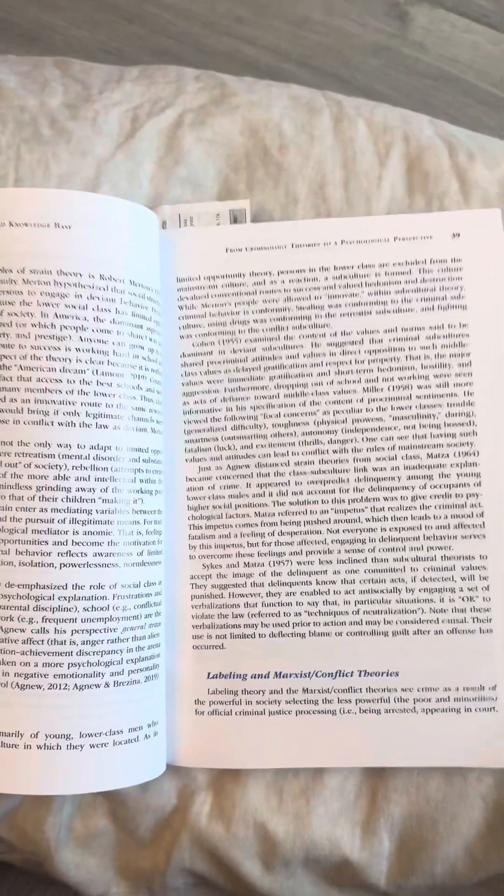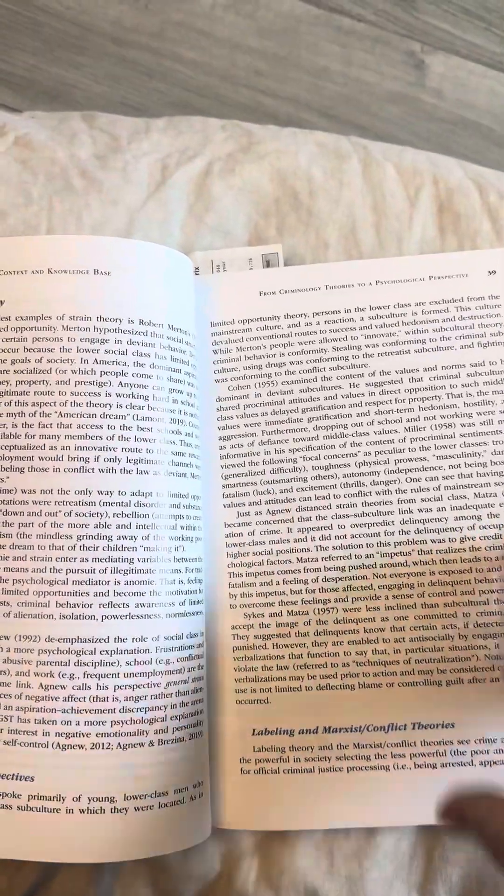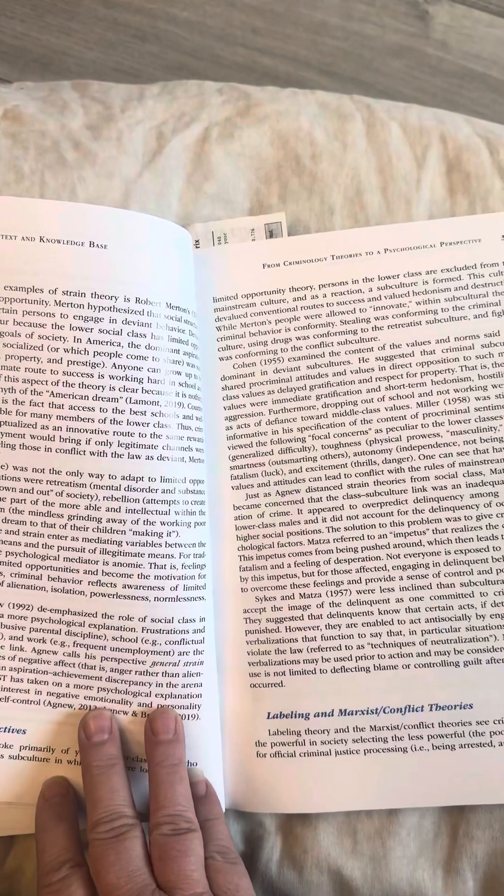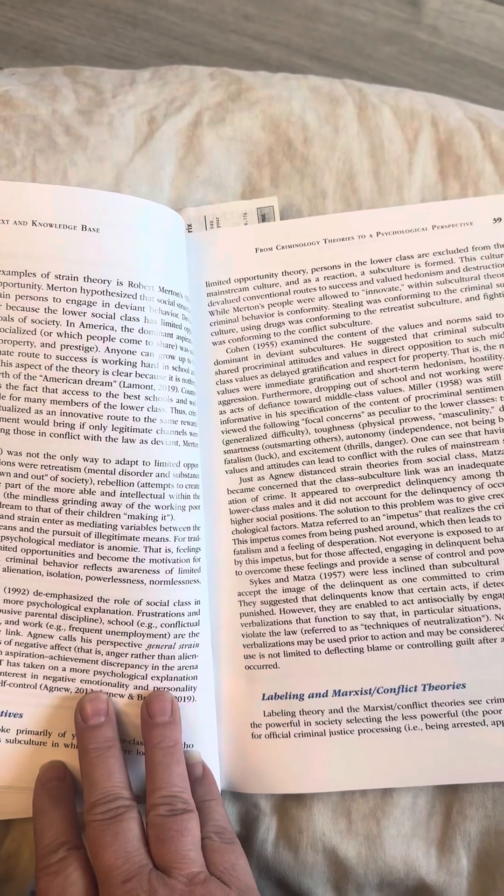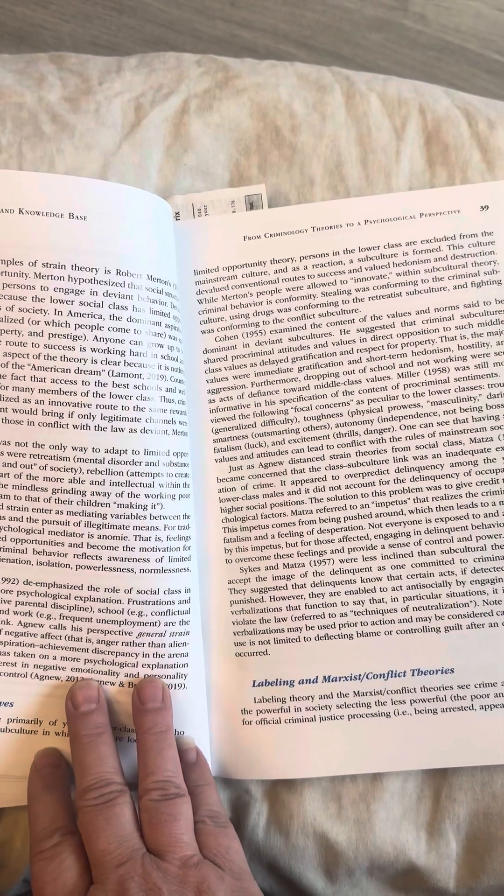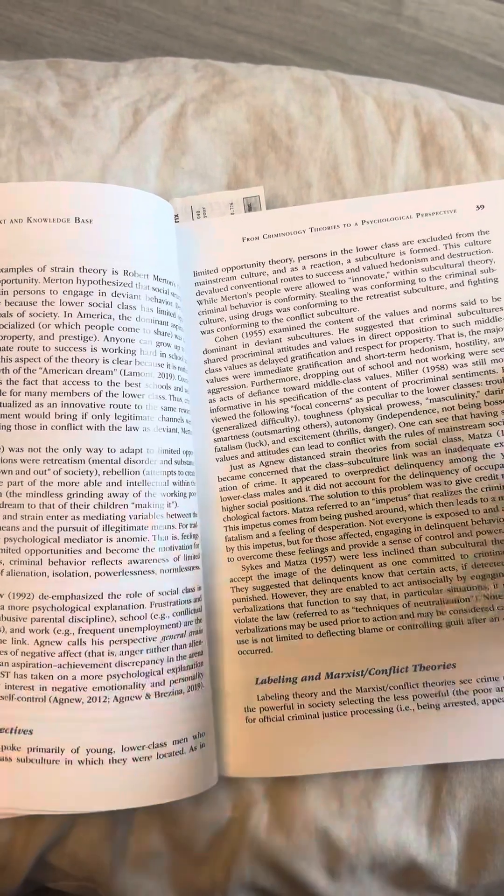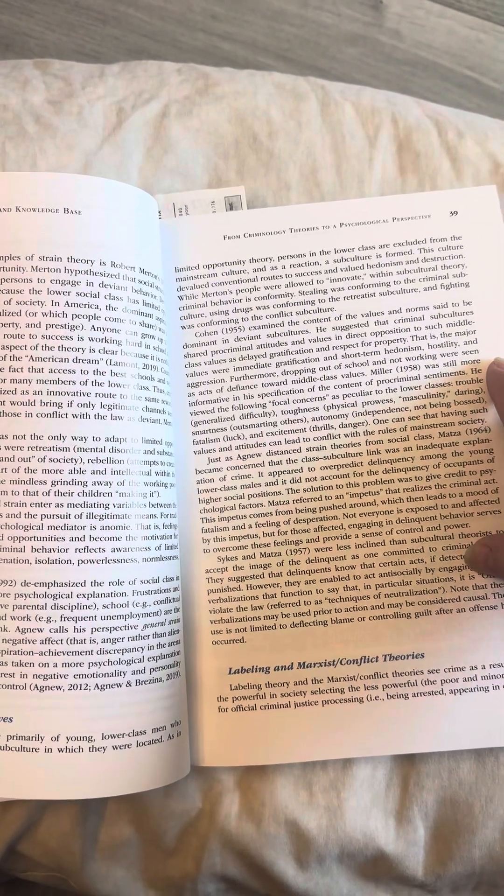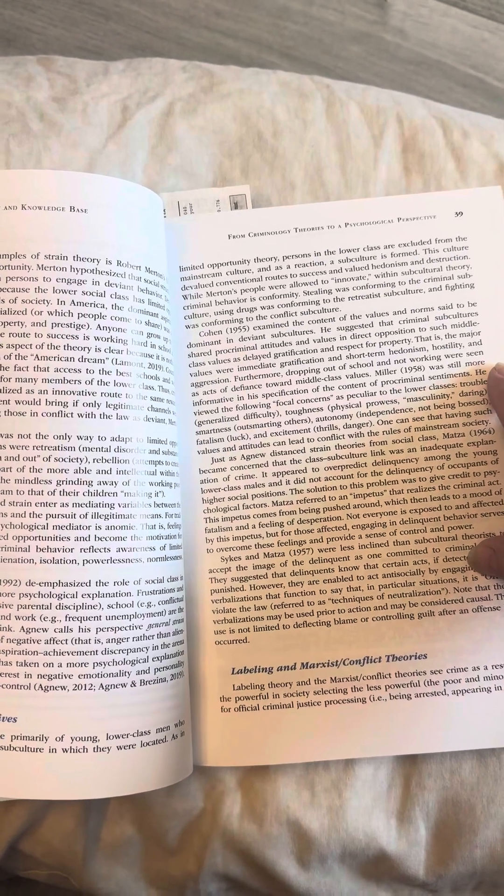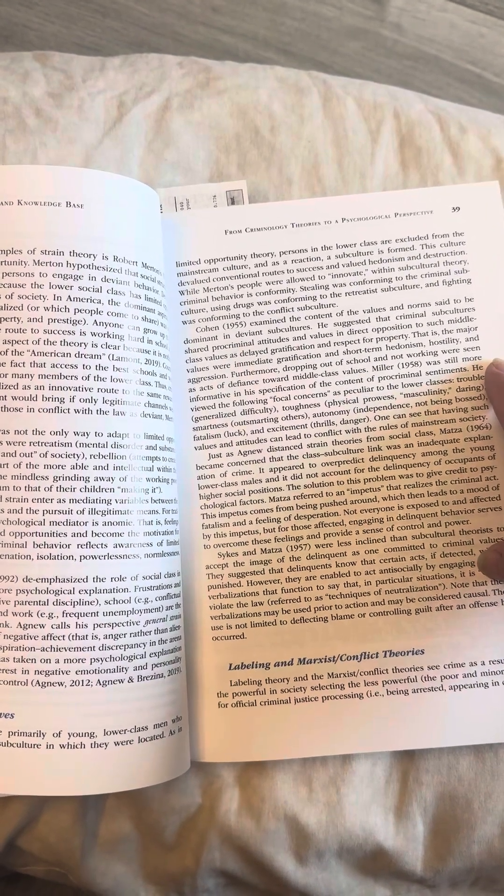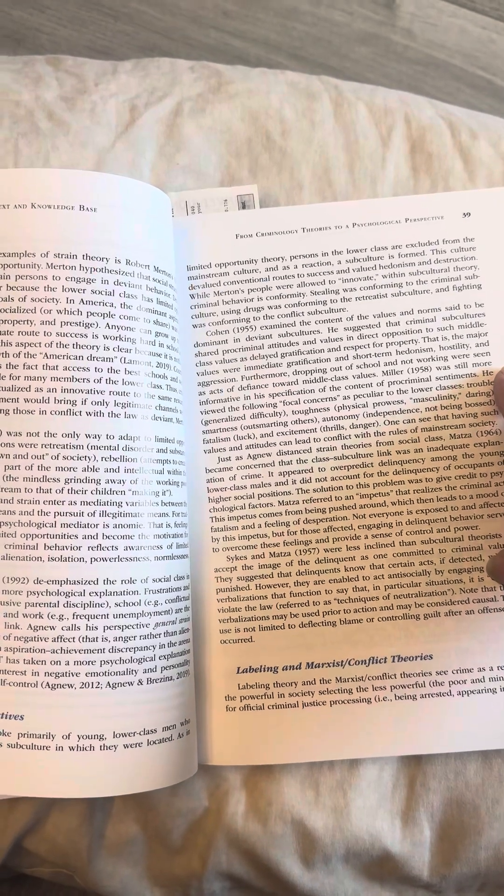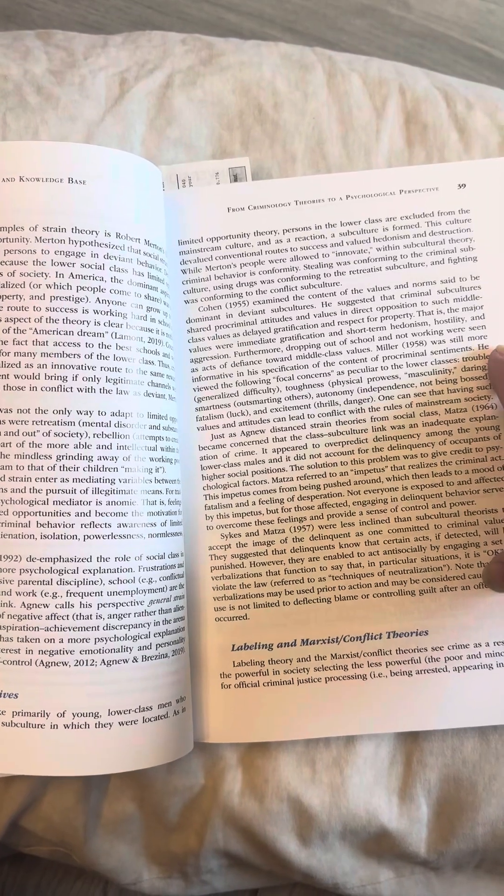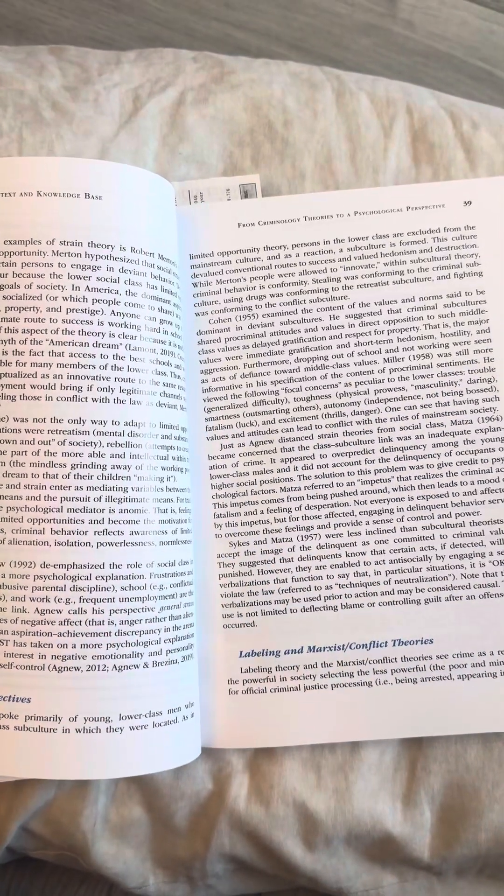Cohen, 1955, examined the content of the values and norms said to be dominant in deviant subcultures. He suggested that criminal subcultures shared prominent pro-criminal attitudes and values in direct opposition to such middle class values as delayed gratification and respect for property. That is, the major values were immediate gratification and short-term hedonism, hostility and aggression. Furthermore, dropping out of school and not working were seen as acts of defiance toward middle class values.